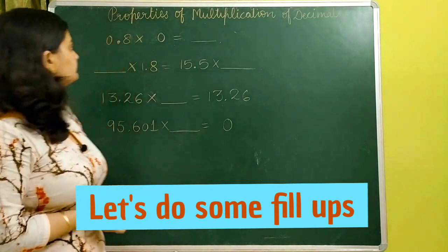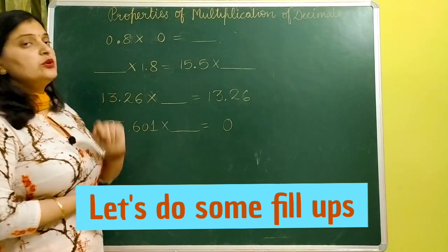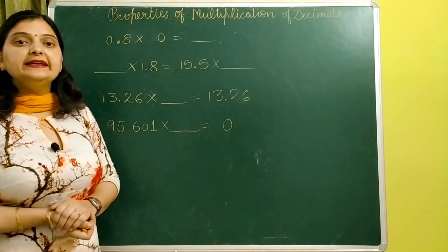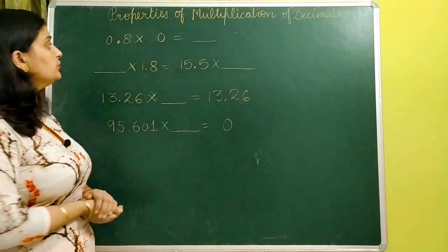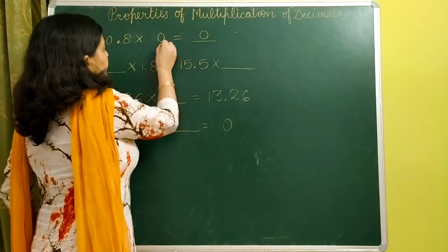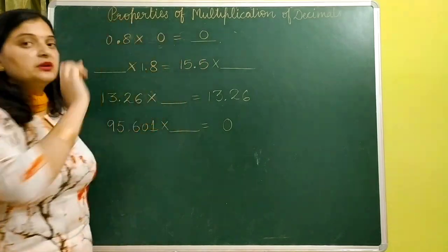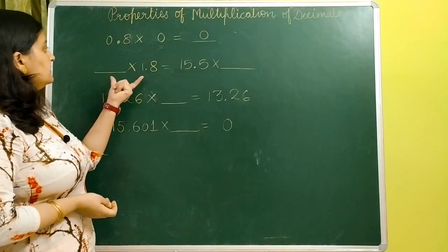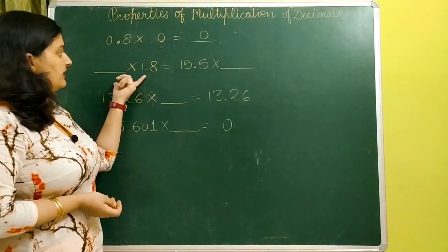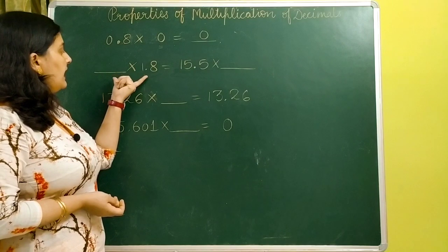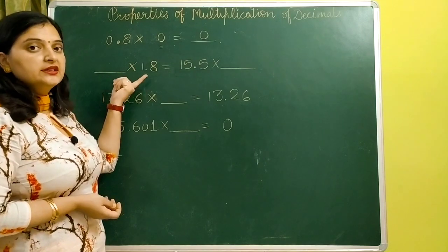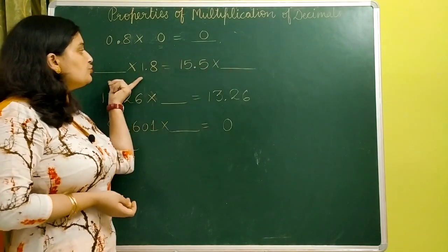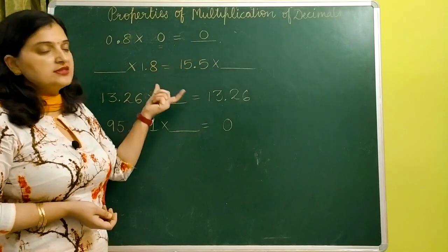The first question: 0.8 multiplied by zero is equal to zero — because we are multiplying the number by zero. The next question involves the product of two decimal numbers. I want the two same decimal numbers on both sides, meaning the two numbers here will be on the right side.